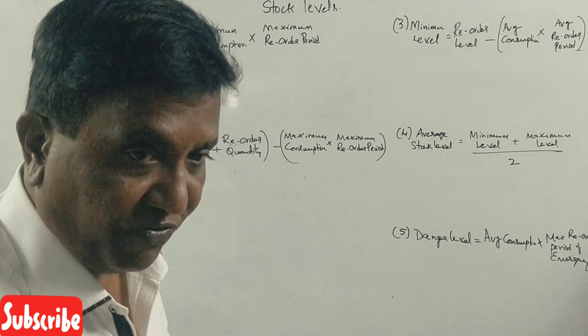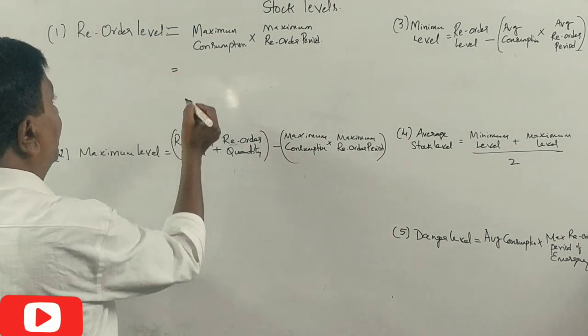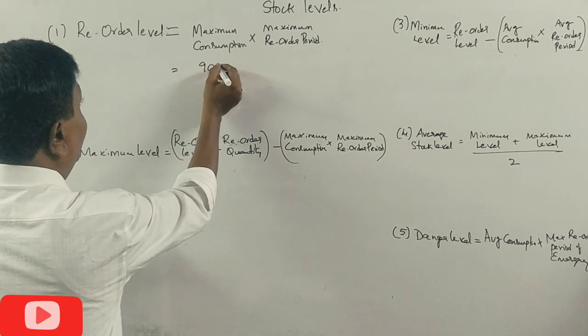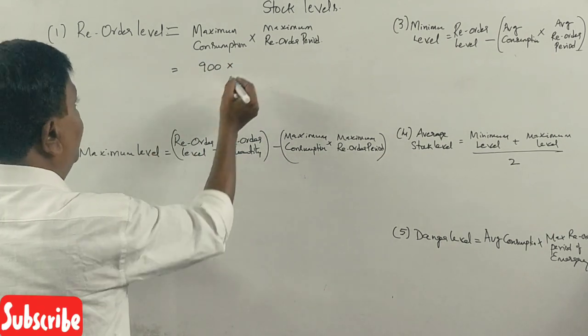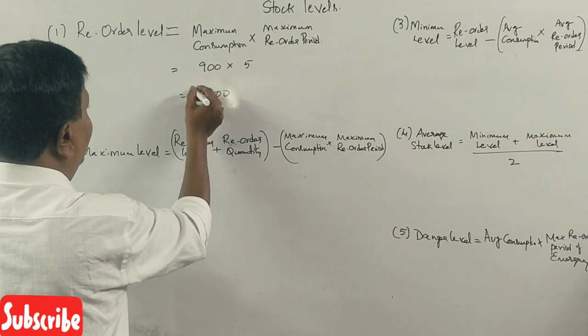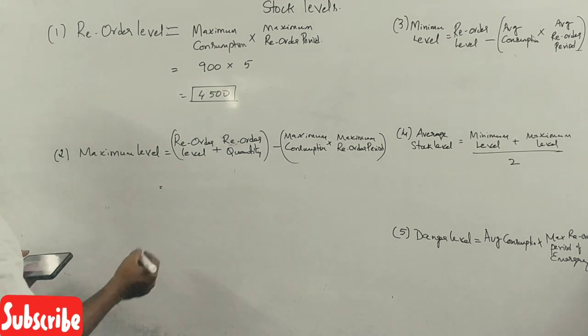Okay now, first the reorder level. Reorder level equals maximum consumption 900 times maximum reorder period 5. 4500 is the reorder level. Next is maximum level.